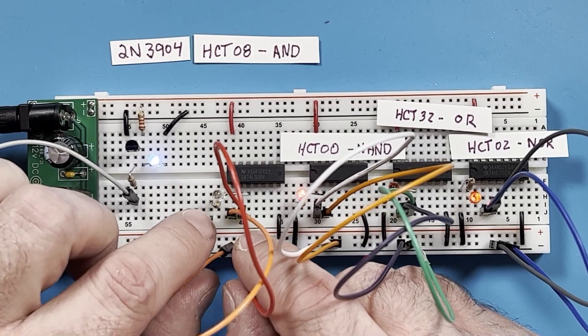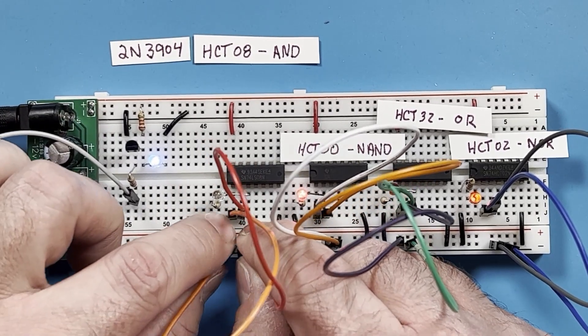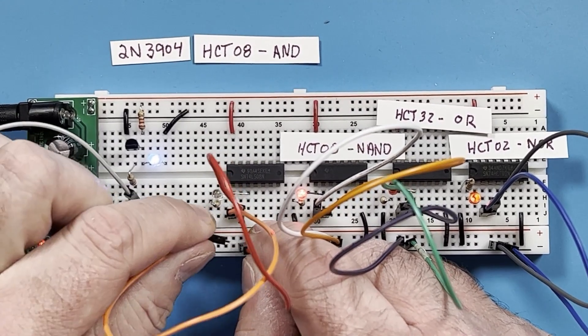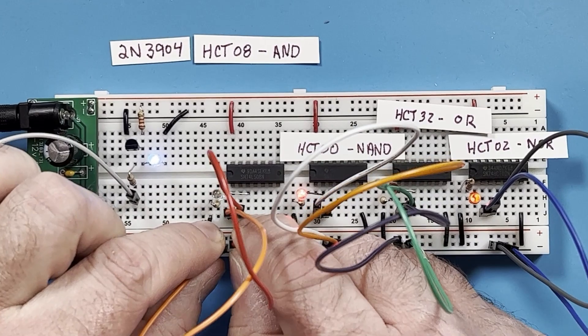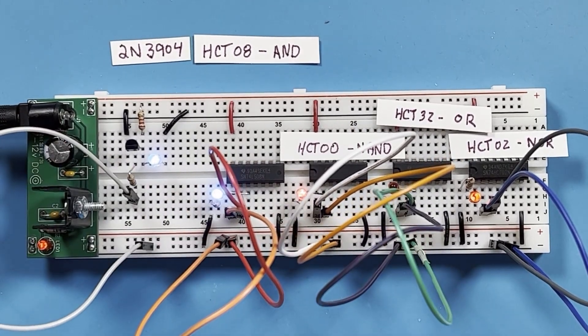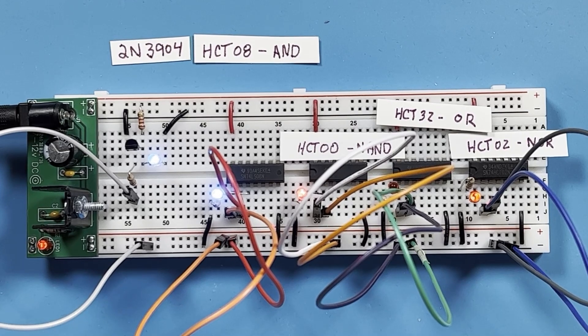So if I take pin 1 here and make it high, nothing happens. If I move that back to low and move pin 2 to high, nothing happens. But if I move them both to high, then the output turns high.